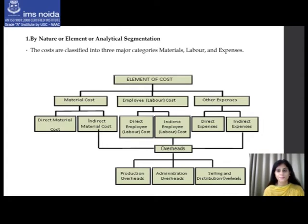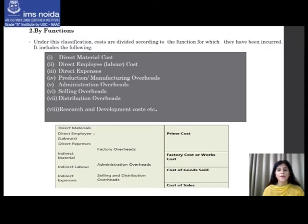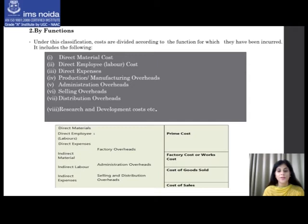Next, classification by functions means classifying costs based on what they have been incurred for. It includes direct material costs, direct labor costs, direct expenses, production or manufacturing overheads, administration overheads, selling overheads, distribution overheads, and research and development costs. Direct material plus direct labor plus direct expenses gives prime cost; adding factory overheads gives factory cost; adding administration overheads gives cost of goods sold; adding selling and distribution overheads gives cost of sales.